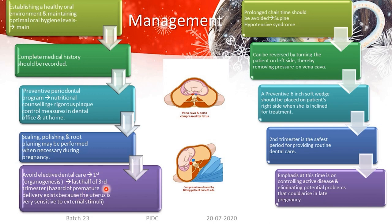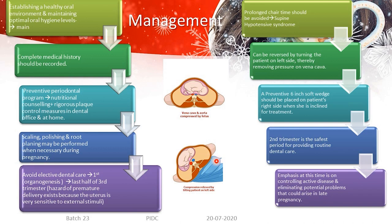Prolonged chair time and procedures should be avoided. There is a supine hypotensive syndrome where the growing fetus, when the patient is in a supine position, compresses the vena cava and aorta. To relieve this, the patient should be tilted to the left side by placing a six-inch soft wedge on the patient's right side when inclined for treatment. The second trimester is the safest period for routine treatment, with emphasis on controlling active disease and eliminating potential problems that could arise in late pregnancy.